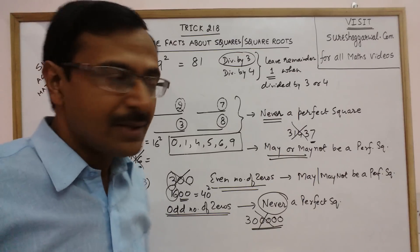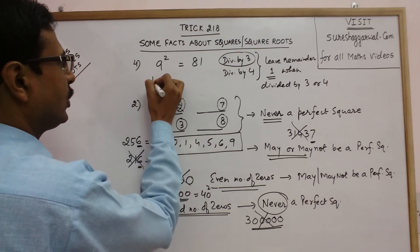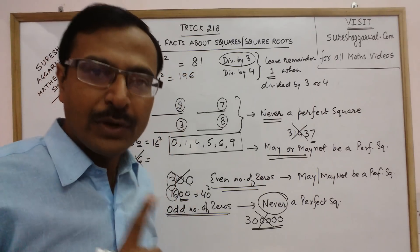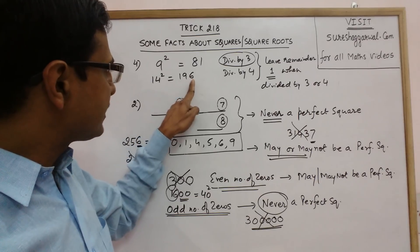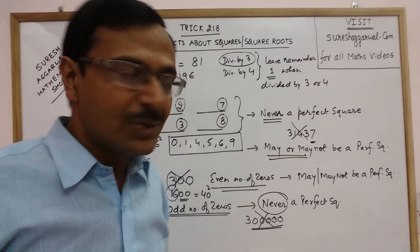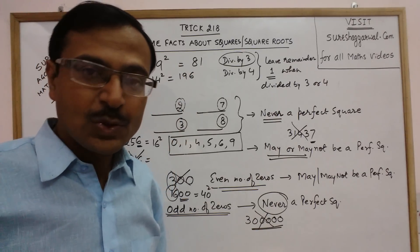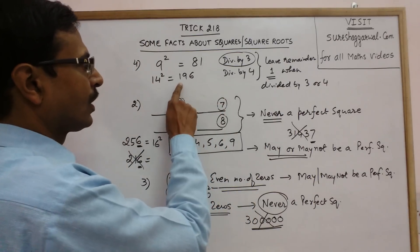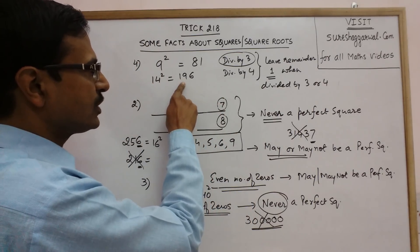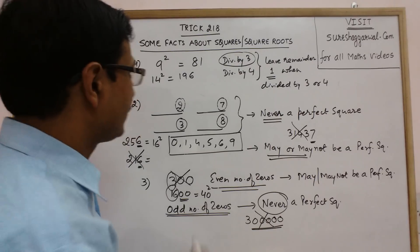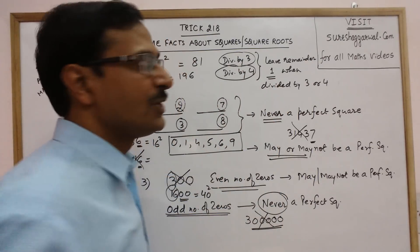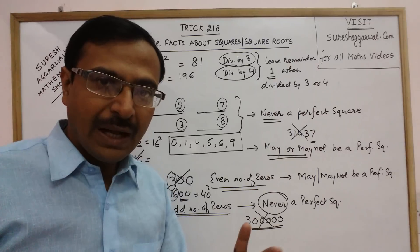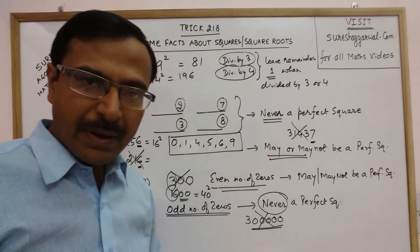But if you take another square — say 14 squared, which is 196 — the digit sum is 1+9+6=16, so 196 is not divisible by 3. You then check divisibility by 4: 4 times 49 equals 196, so this number is divisible by 4. So whatever perfect square number you take, it will either be divisible by 3 or divisible by 4.